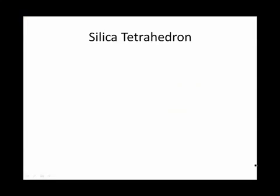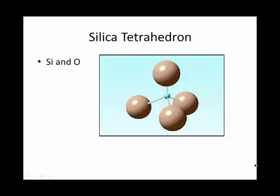The building block of a silicate mineral is the silica tetrahedron composed of silicon and oxygen. It has one silicon atom in the center, and it's bonded to four oxygens around.